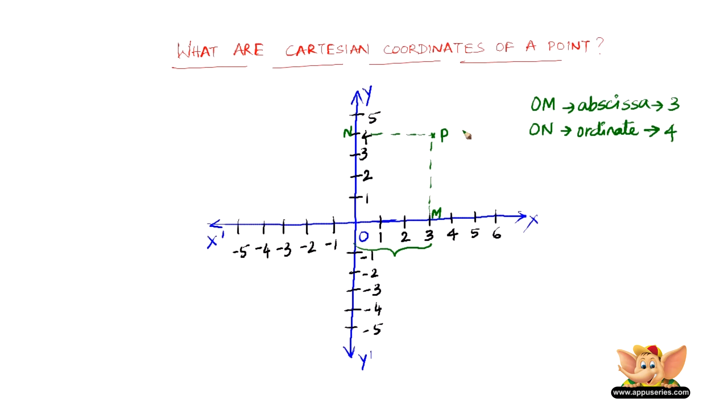Therefore, we can write that the coordinate points of point P is (3,4). And very importantly, 3 and 4 cannot be interchanged as they are ordered pairs. We can also say that the x-axis measurement of P is 3 and the y-axis measurement of P is 4. So the Cartesian coordinates of point P here is (3,4).